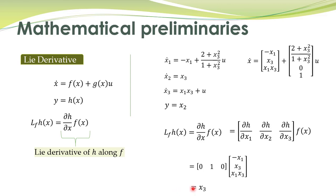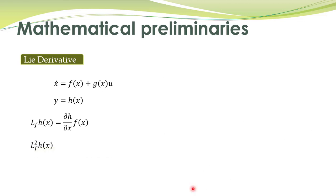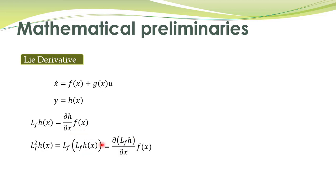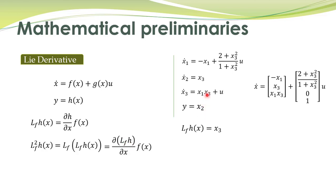There is another concept: the second Lie derivative of h of x along f of x. It is defined as the Lie derivative of the first Lie derivative expression along f of x. By definition, it equals the partial derivative of the first Lie derivative expression with respect to x, multiplied by f of x, where the first Lie derivative is itself given by the relation L_f h of x.